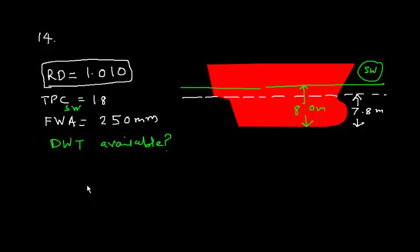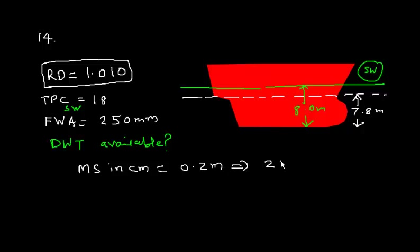We need to find the mean sinkage. Mean sinkage in centimeters is 8 meters minus 7.8, which is 0.2 meters, and converting to centimeters gives 20 centimeters. Since the vessel is not in salt water but in dock water, there is going to be a dock water allowance.